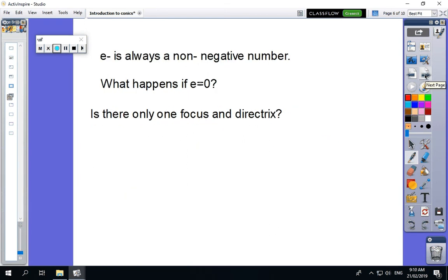So e is always a non-negative number. And we just discussed what happens if e is equal to zero. So obviously that's the case of the circle. So you've got to think about why e is always non-negative because things get smaller and larger.